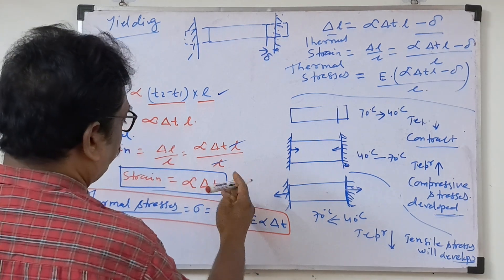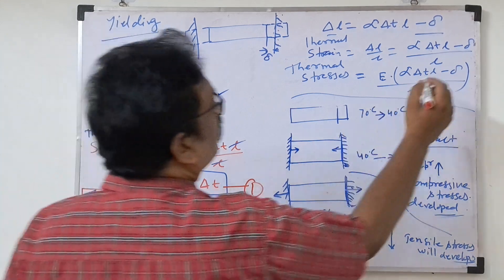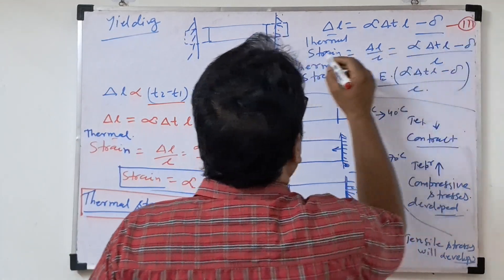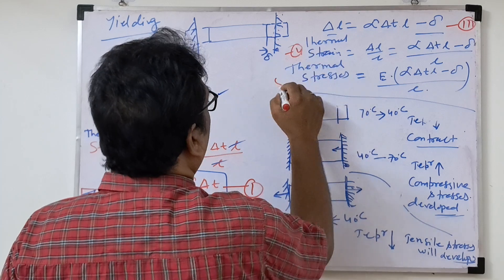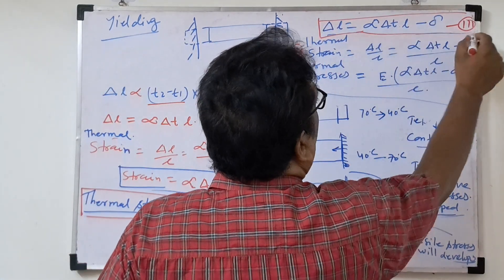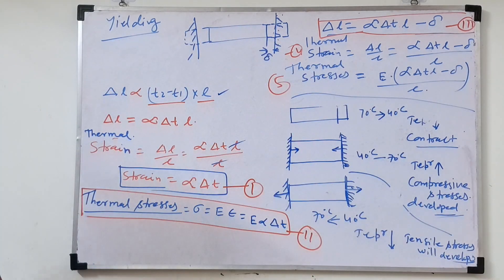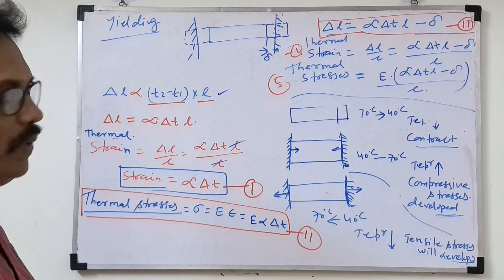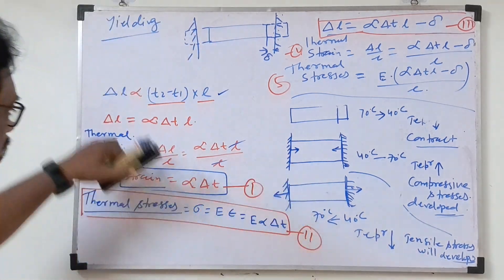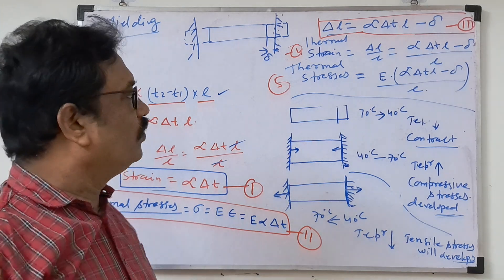So formula number one is the free elongation, formula two is the strain, formula three is the stress, and then stress with yielding. Thermal stresses looks very complicated, but if you understand how the formula is reached, you can solve any type of problem.